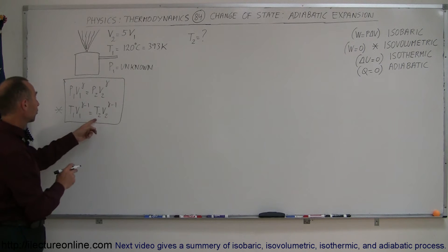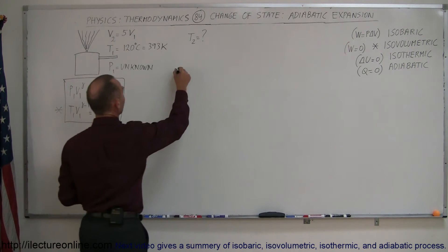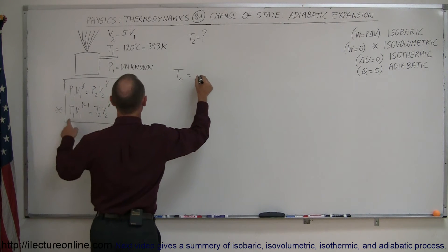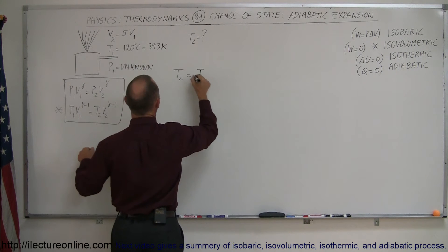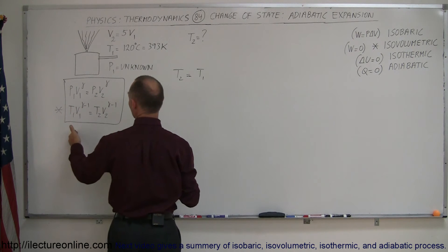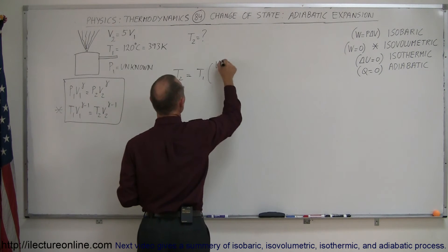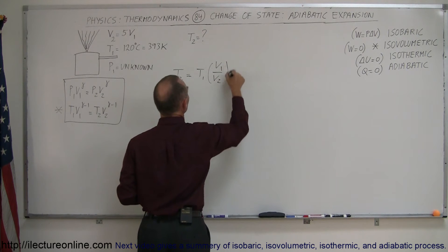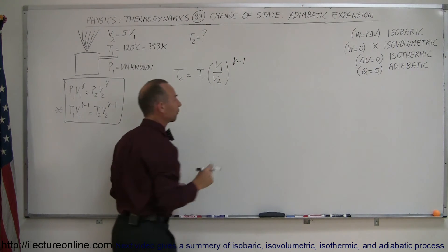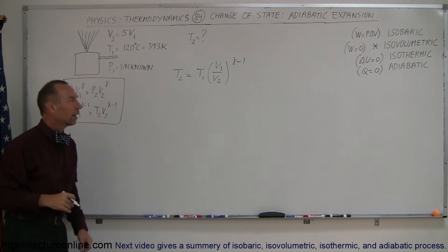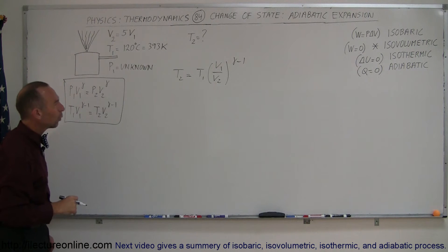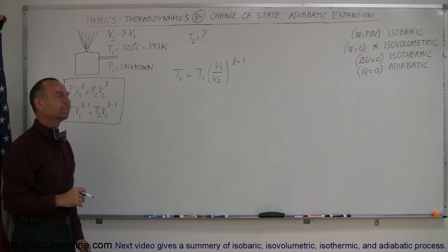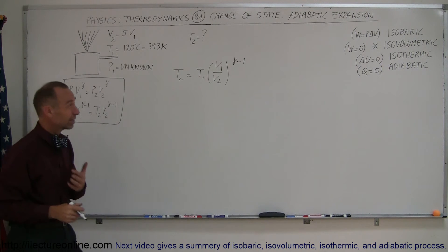So if I want to solve for T₂, I can then say that T₂ is equal to T₁ times the ratio of V₁ divided by V₂ raised to the gamma minus 1 power, and of course the steam coming out, that's primarily water vapor, so maybe we should use the gamma for water vapor as a triatomic molecule,